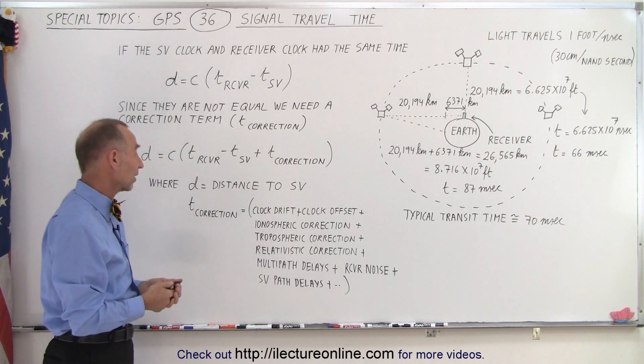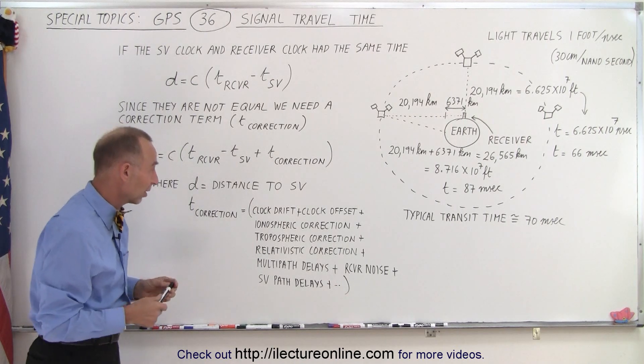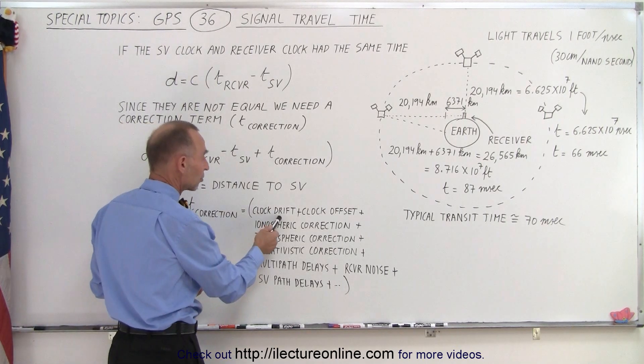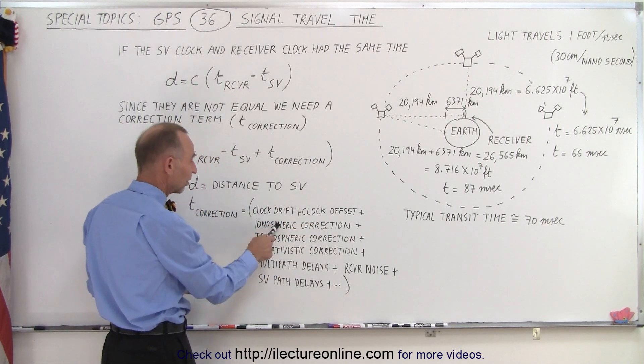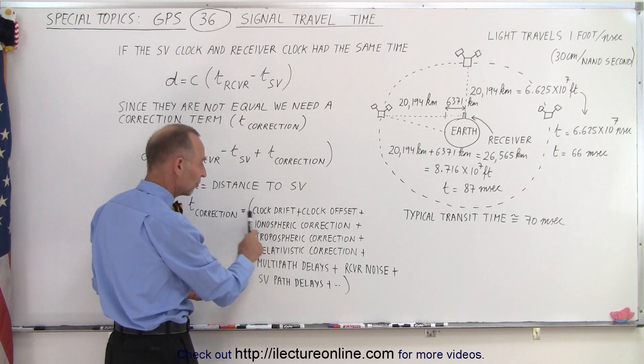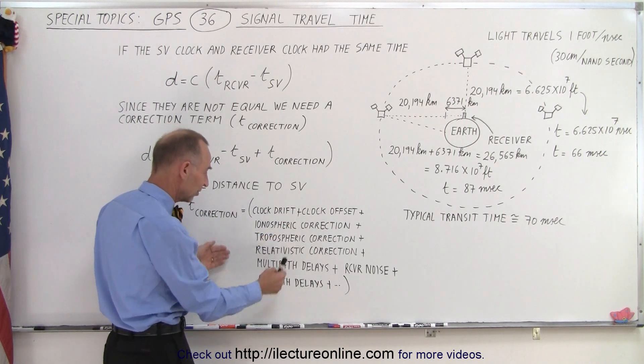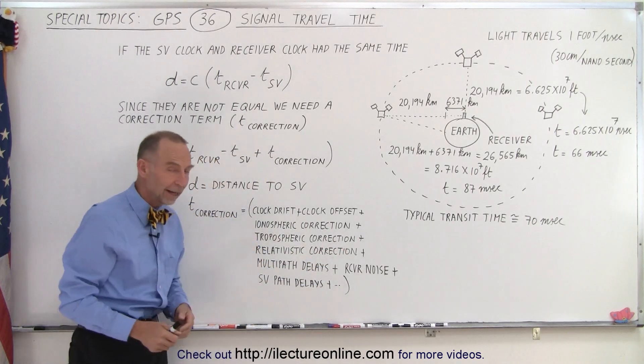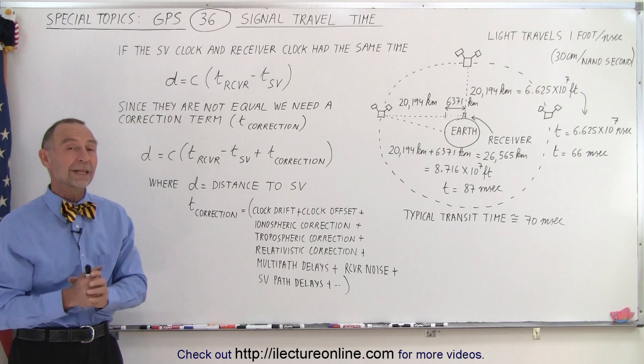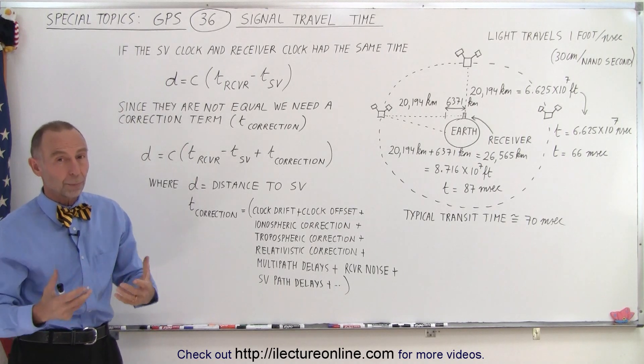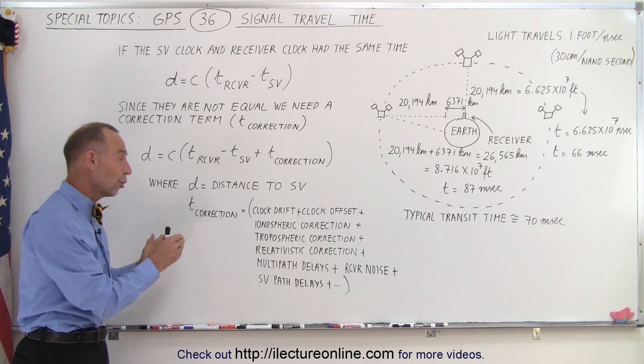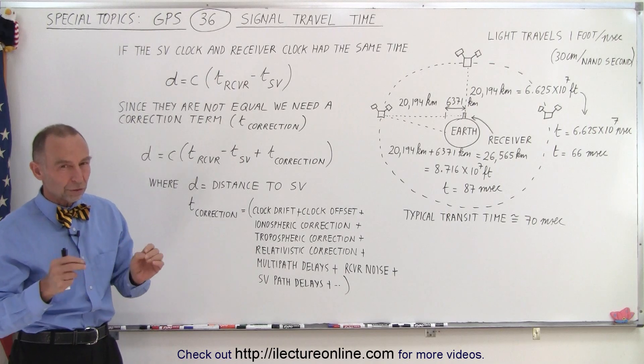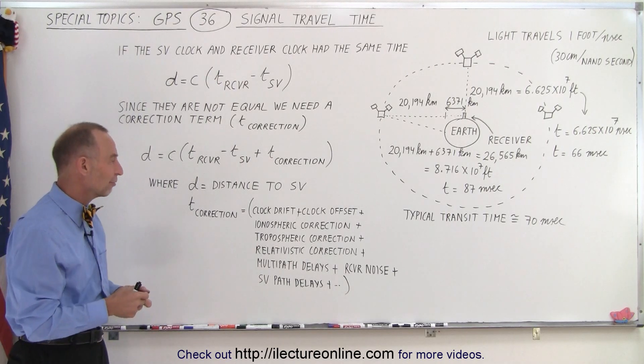Now what is included in that correction? Well there's a lot of different things. We have the clock drift, the clock offsets, the ionospheric correction, the tropospheric correction, the relativistic correction, the multipath delays, the receiver noise, SV path delays and there's several more. So there's a whole slew of things we need to account for, some more important than others, and we will show you in the next so many videos what those things are and how to compensate for them.